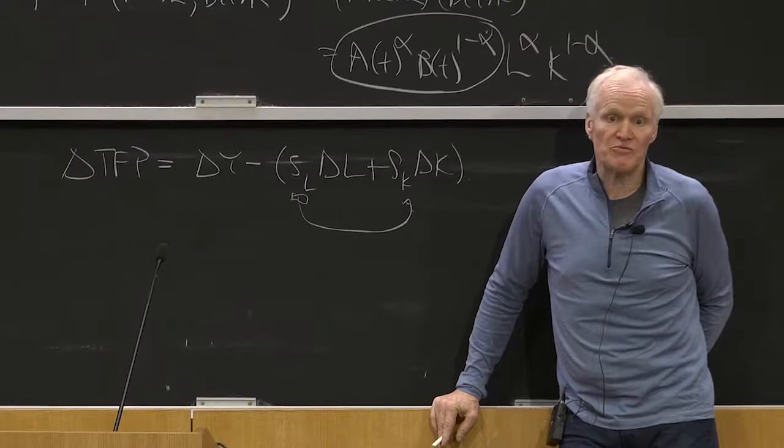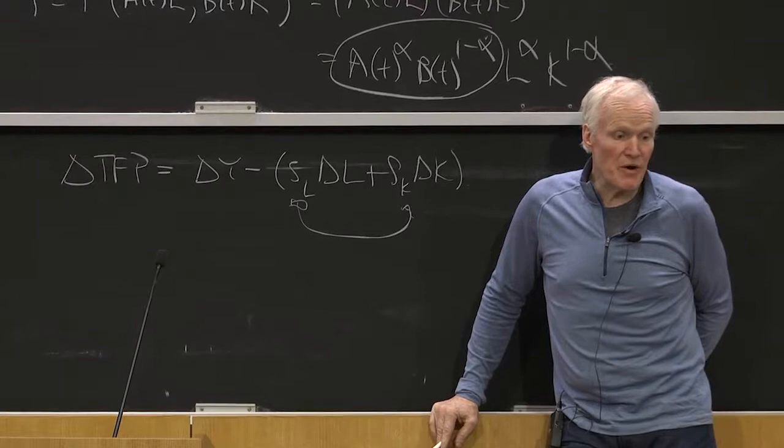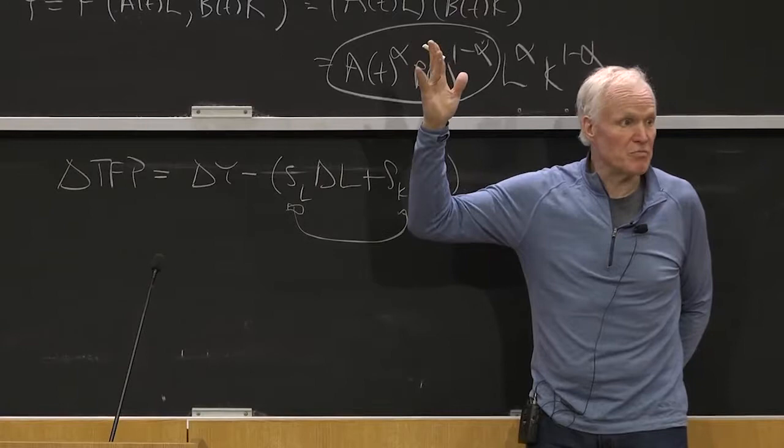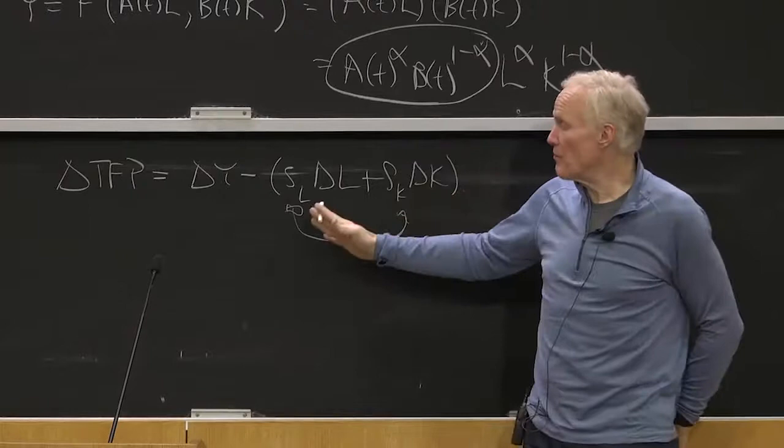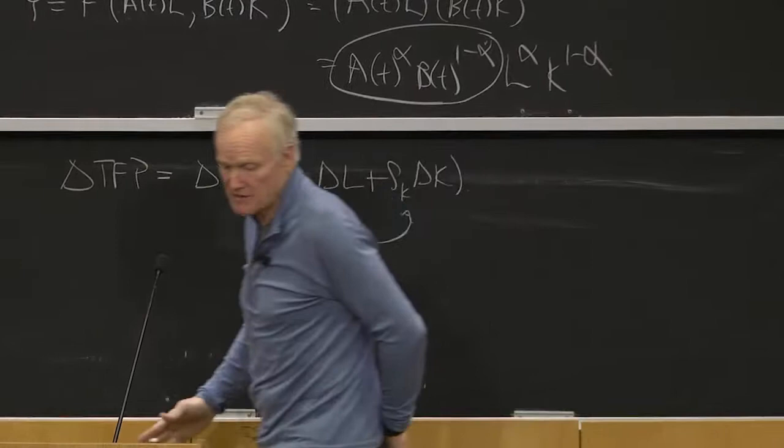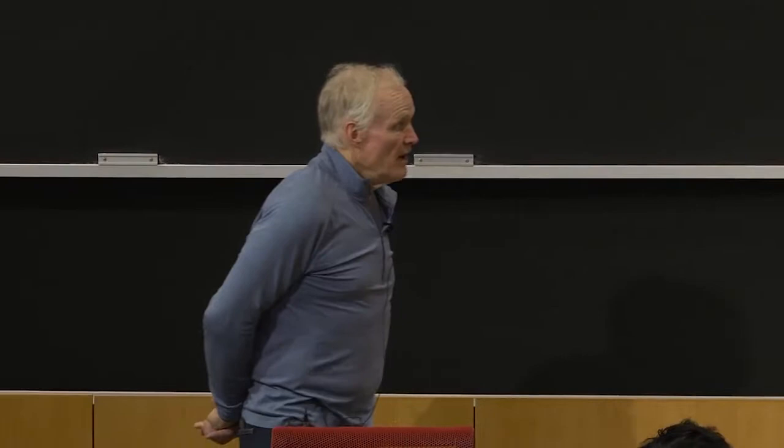It's exactly equivalent to what we started in lecture one, where we can measure whether the consumer was better off or worse off just by looking at changes in quantities at fixed prices. You can approximate the difference term by the budget line. Here, we're approximating the production function by the tangent. We're assuming each input is being paid its marginal product.